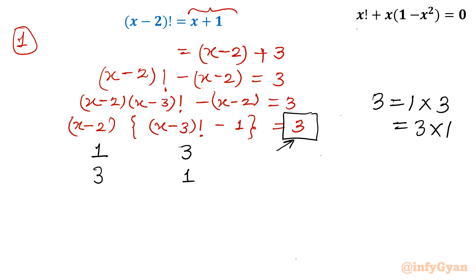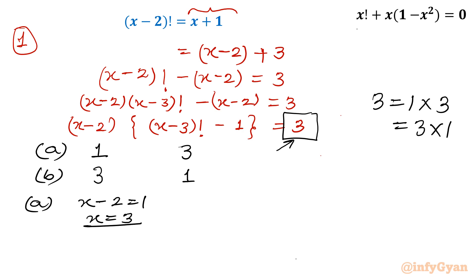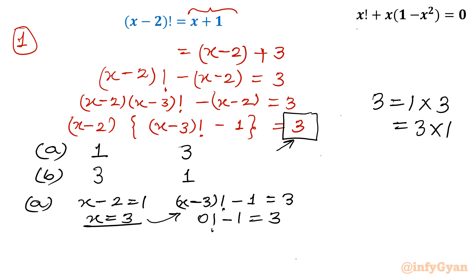Let's consider case A: x minus 2 equal to 1, which means x is equal to 3. Now the curly bracket must be verified: (x minus 3) factorial minus 1 should equal 3. Putting x equal to 3: we get 0 factorial minus 1, which is 1 minus 1 equals 0. Is this equal to 3? No — so this case is not accepted.